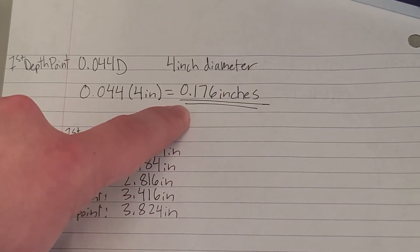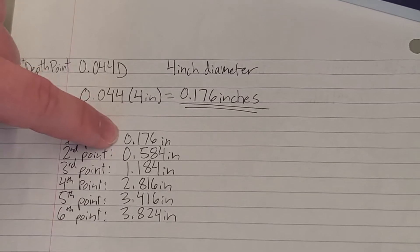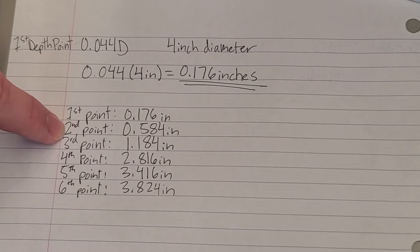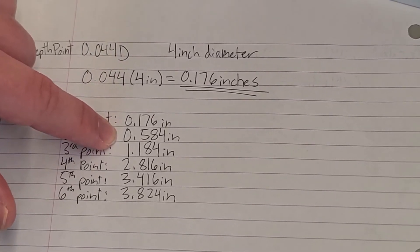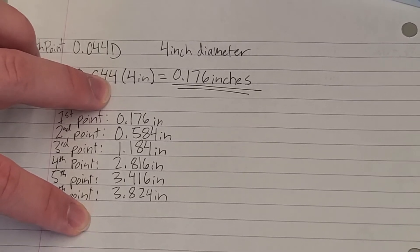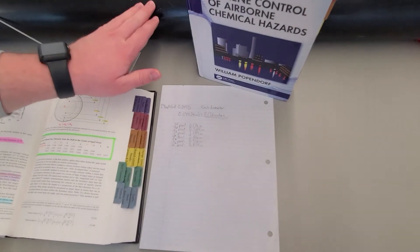We would then go down and calculate each point out individually. Starting at 0.176 inches, then we would take a second measurement at 0.584 inches and on down the list. We would take all of these points and measure them to make sure to get an accurate average air velocity across the whole duct.